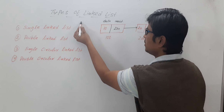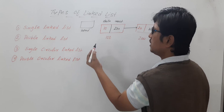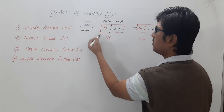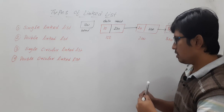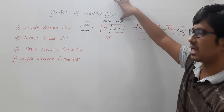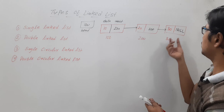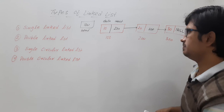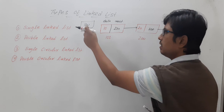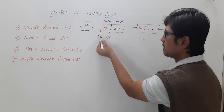We also have a head pointer which points to the first node, storing its address. So we have three nodes — each with data and the address of the next node — and the last node's address is null. The head pointer points to the first node.